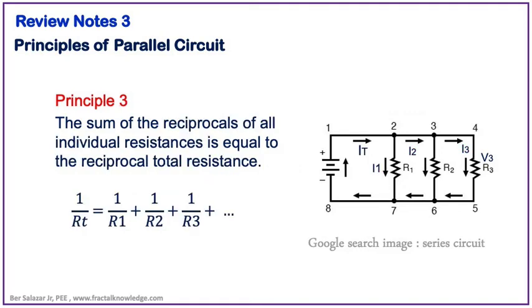And the third principle of parallel circuit is about its connected resistance or load. The reciprocal total resistance in parallel is equal to the sum of all the reciprocals of all the individual resistances. That is, 1 over RT is equal to 1 over R1 plus 1 over R2 plus 1 over R3 and so on.